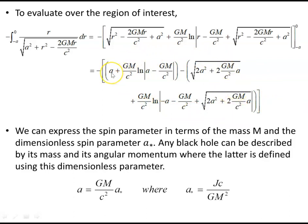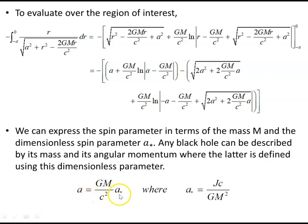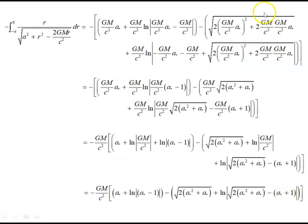Now we replace a in terms of a quantity involving the dimensionless spin parameter a*, because what's quoted in the literature tends to be the mass of the black hole and the dimensionless spin parameter. The spin parameter a can be expressed as a = GM/c² times a*. So any black hole can be described by its mass and its angular momentum through this dimensionless parameter. Substituting a = GM/c² · a* gives quite a long expression which needs tidying up.